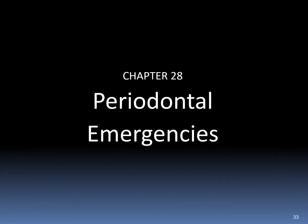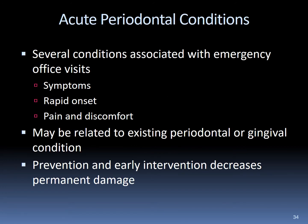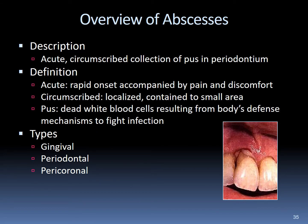Our last chapter is Chapter 28: Periodontal Emergencies. Acute periodontal conditions associated with dental emergencies may be related to periodontal and gingival conditions. Early intervention and prevention can decrease permanent damage to the periosteum. An abscess is defined as the acute, circumscribed collection of pus in the periodontium — acute meaning rapid onset with pain and discomfort, circumscribed defining a small localized area, and pus being an accumulation of dead white blood cells from the body's defense mechanism. Types of abscesses include gingival, periodontal, and pericoronal.